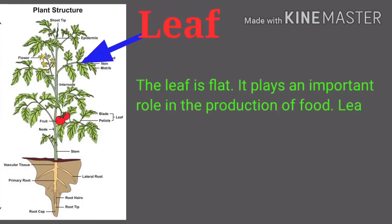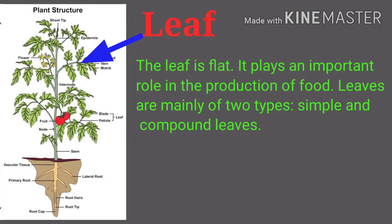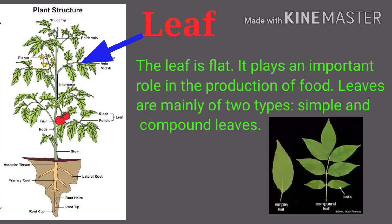The leaf is flat and plays an important role in the production of food. Leaves are mainly of two types: simple and compound leaves.